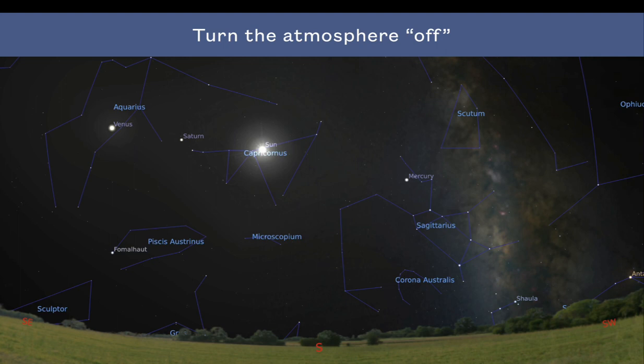If you could turn off the atmosphere — the sky is blue because of scattered light through Rayleigh scattering in our atmosphere — if the Earth didn't have an atmosphere, you could look up, the Sun would be in the sky, and you would see stars and constellations in the daytime sky because there wouldn't be that scattered light. So it's possible to track where the Sun is against the background stars even though you can't directly see them during the daytime.